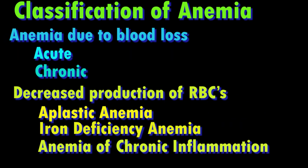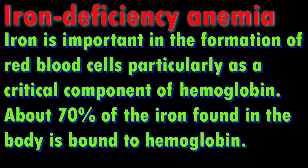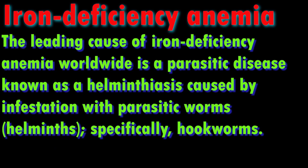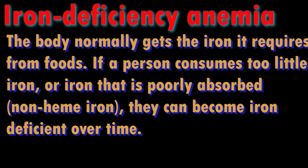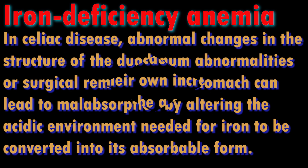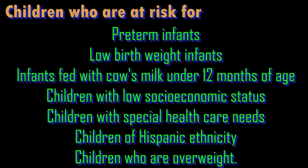Iron deficiency anemia and anemia of chronic inflammation. Iron is an essential element in the synthesis of hemoglobin. Causes of iron deficiency anemia include decreased iron intake, iron deficiency diet, increased iron utilization in postnatal growth, adolescent growth spurt, iron loss — physiologically from menstruation and pregnancy — faulty or incomplete iron absorption, autoimmune gastroenteritis, celiac disease, H. pylori infection. Pathological iron loss includes GI bleed, urogenital bleeding, pulmonary hemosiderosis, intravascular hemolysis, and malignancy such as colon cancer.